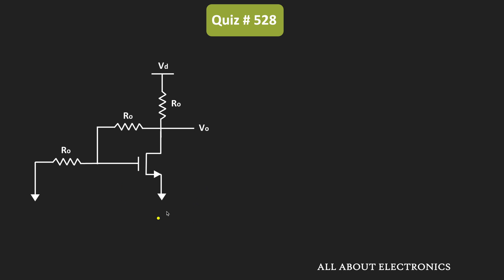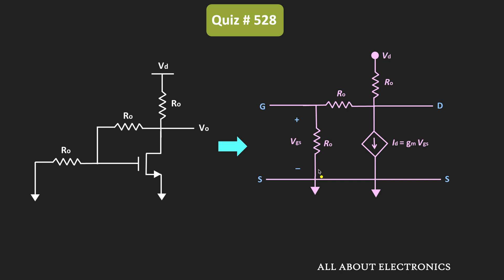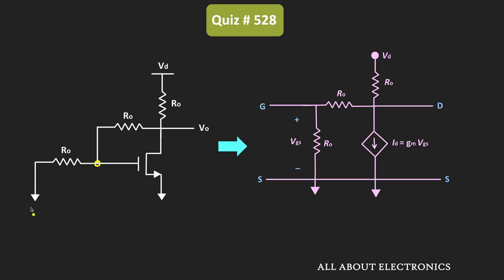When we replace the MOSFET with the small signal model, the equivalent small signal circuit can be represented by the current source where id equals gm times vgs, where vgs is the voltage between the gate and source terminals. The source terminal is connected to ground, and the resistor r0 is connected between the gate and the ground terminal. Since the source is also at ground potential, r0 is effectively connected between the gate and source terminal, and vgs is the voltage across this resistor r0.